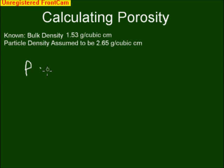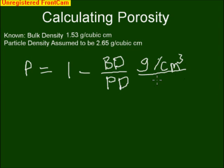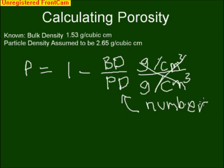Porosity, represented by P here, equals 1 minus bulk density over particle density. So, this is in grams per cubic centimeter, and particle density is also in grams per cubic centimeter. These values cancel out and leave us with just a number, and this is actually a percentage number.